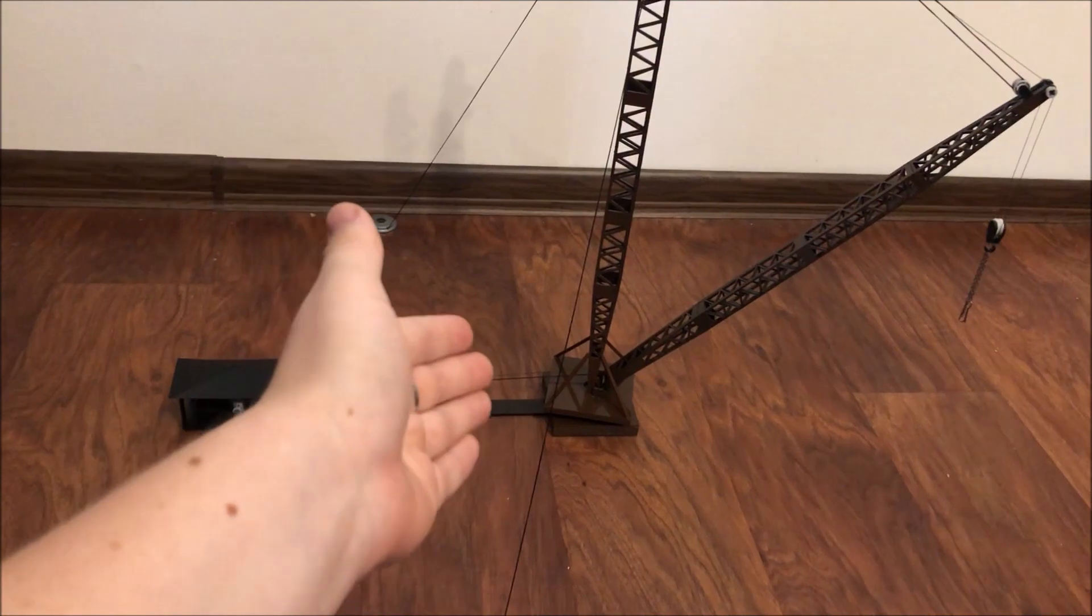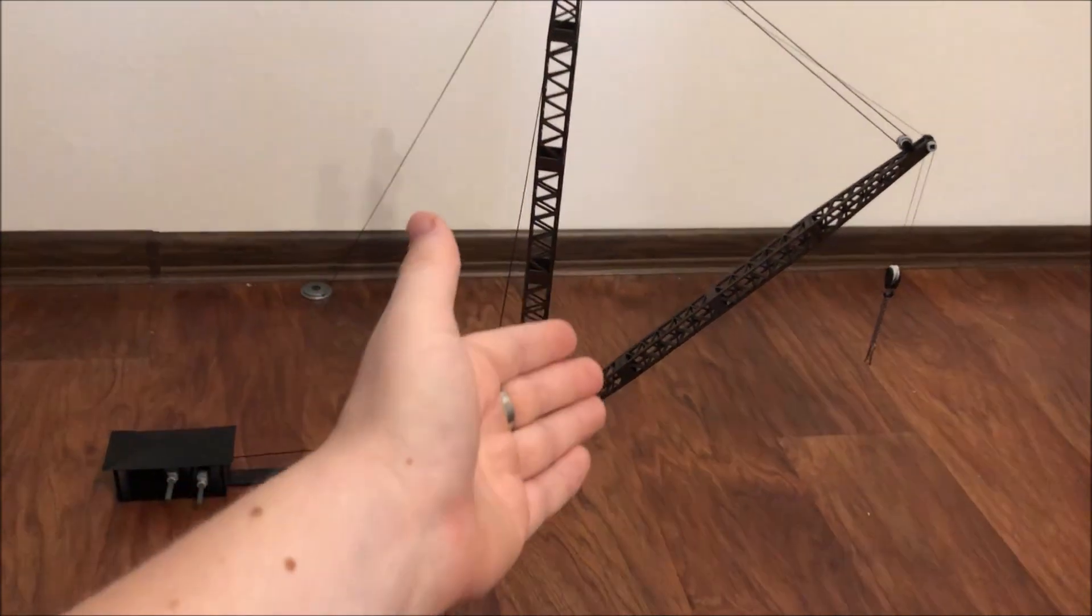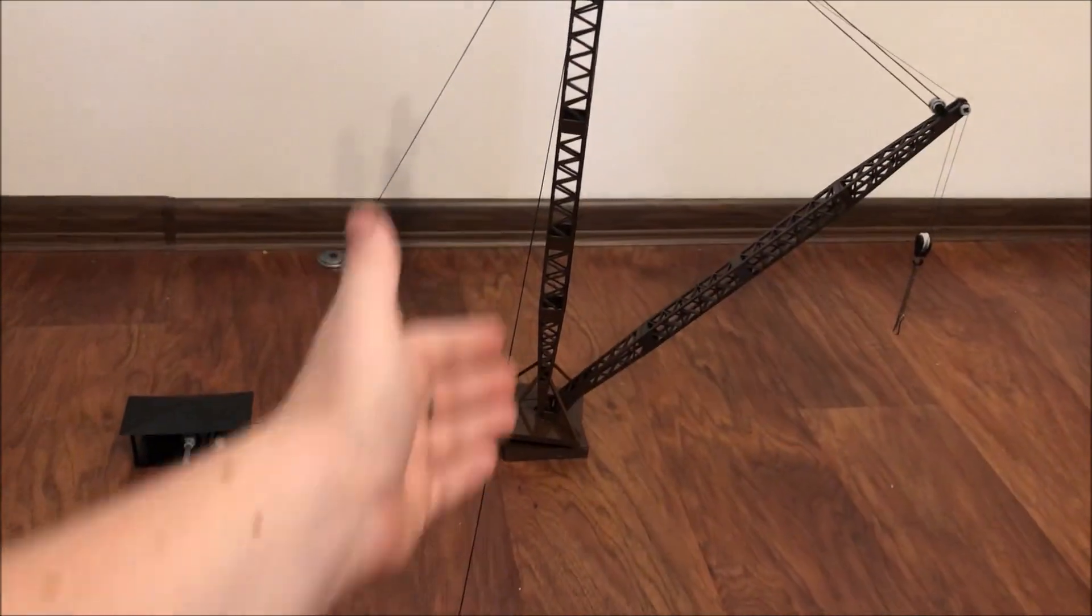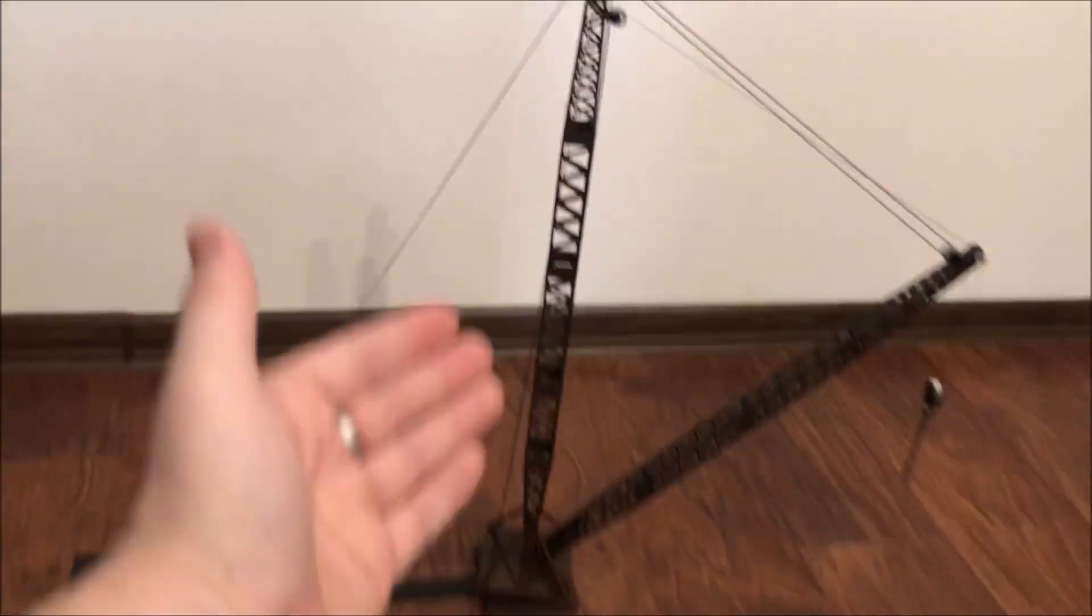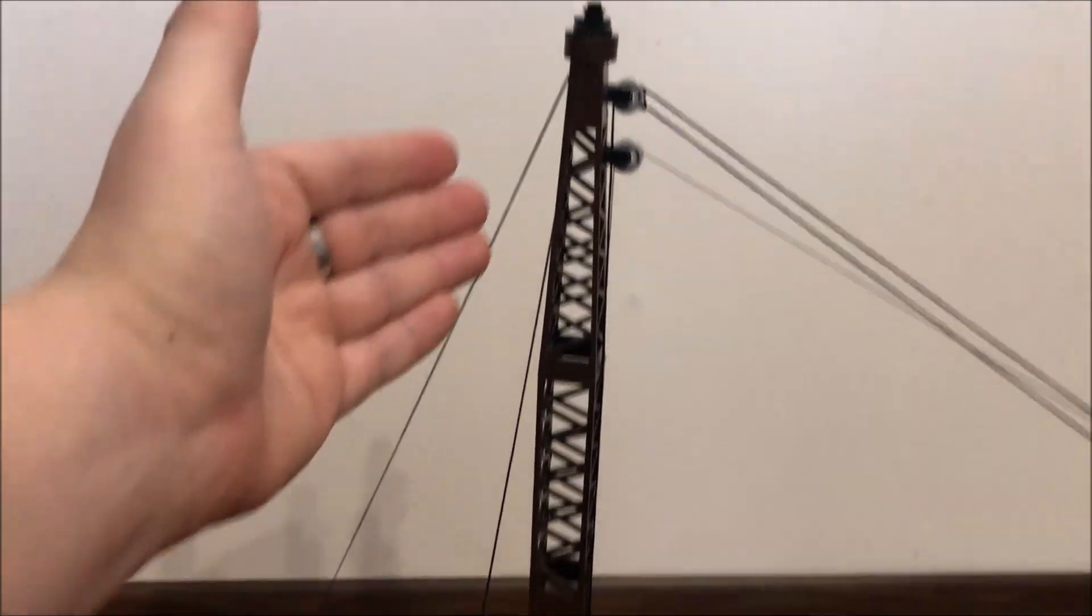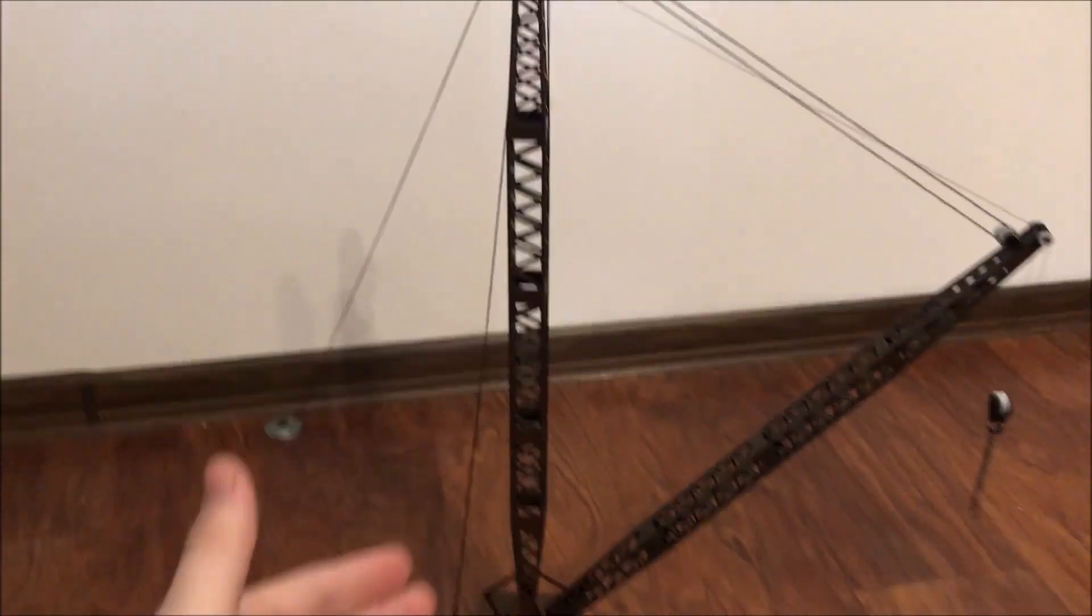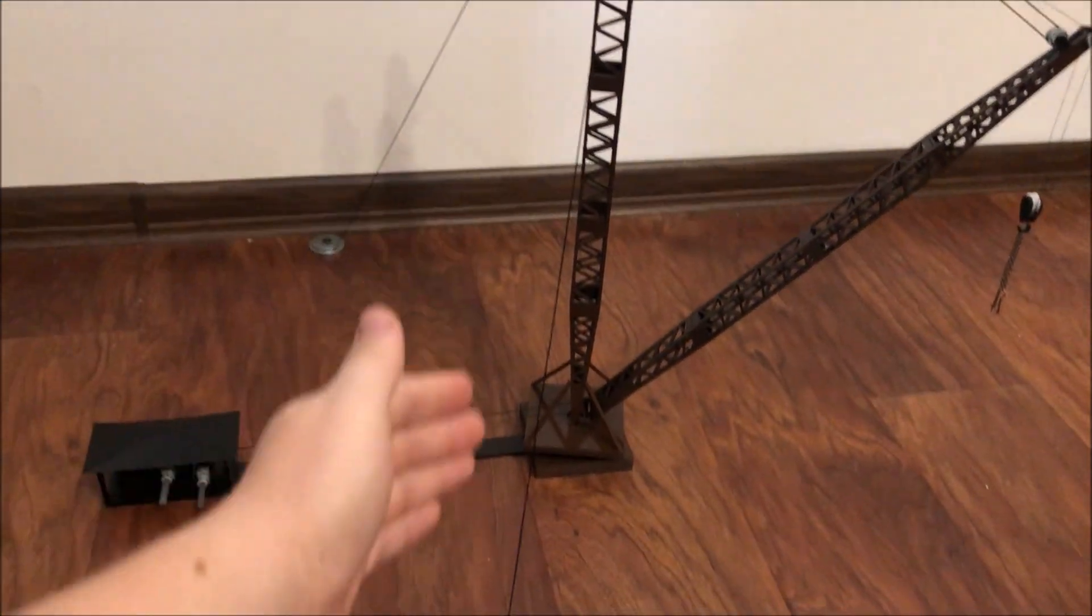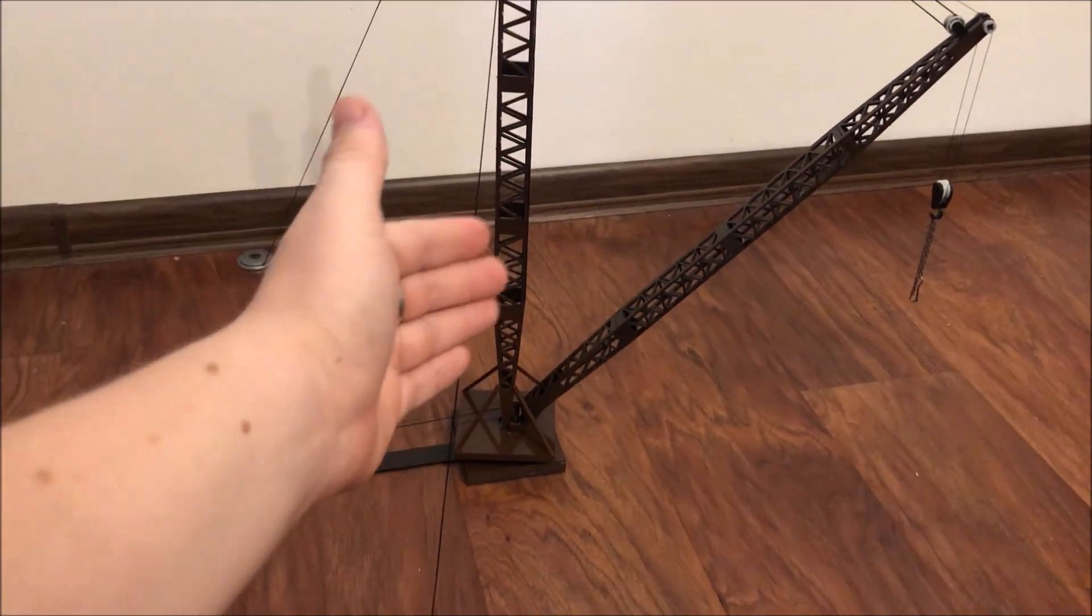Here we have a cable-stayed mast crane, scale 1 to 87. First of all, why is it cable-stayed mast? Because its main load-bearing structure is a mast and the cables are tensioned. In this case, such an imitation is made which holds this vertical mast.